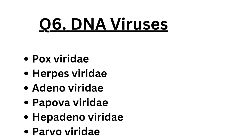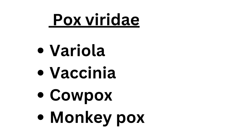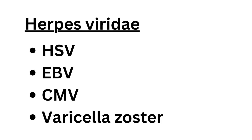Question number six: DNA viruses. The DNA virus families are Poxviridae, Herpesviridae, Adenoviridae, Papovaviridae, Hepadnaviridae, and Parvoviridae. Viruses under Poxviridae include variola, vaccinia, cowpox, and monkeypox. Viruses under Herpesviridae include HSV (herpes simplex virus), EBV (Epstein-Barr virus), CMV (cytomegalovirus), and varicella zoster.